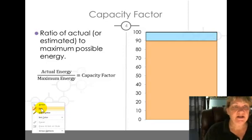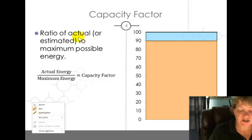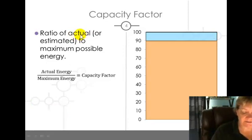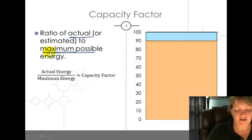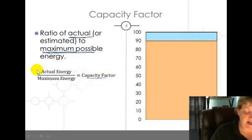So what's capacity factor? It's really simple. It's simply a ratio of the actual or estimated to the maximum possible energy. So actual over maximum equals capacity factor. Since both of these are, you want to make sure they're in watt hours or watt days. When you divide one into the other, you get this, and usually we express it as a percent, so I multiply the answer by a hundred.